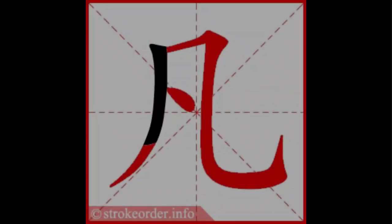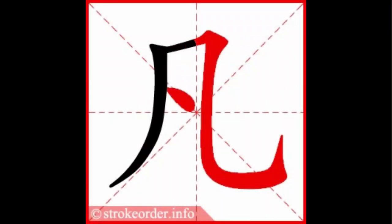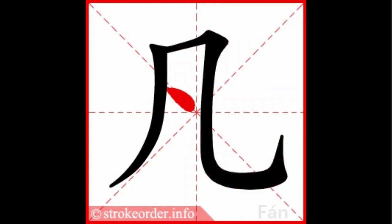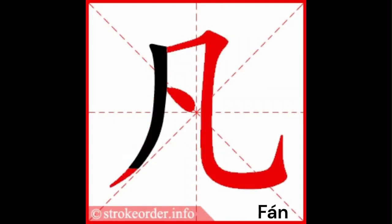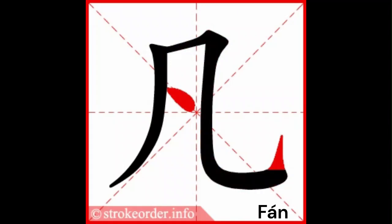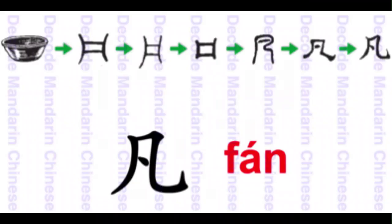In today's video, we'll teach you the Chinese character for ordinary, pronunciation: Fan (凡). This is a fun character in the Chinese language because 凡 looked like a plate or flat dish, which was considered an ordinary item that gradually morphed into its modern form. This makes it easier to learn.